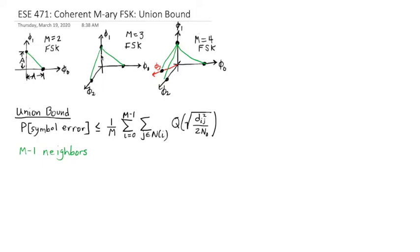They're both A away from the origin. So to calculate this distance, we can use the Pythagorean theorem to come up with the fact that this distance D is equal to square root of two times A, if this is A away from the origin.